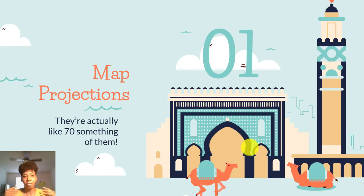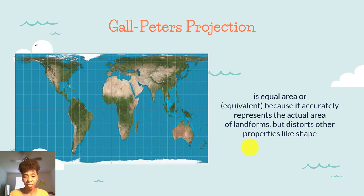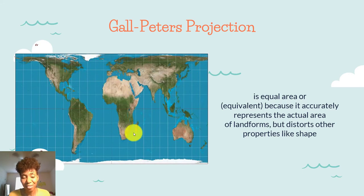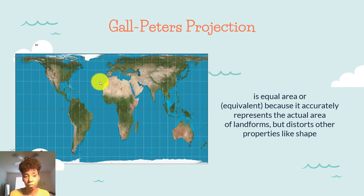There are at least 70 different types of map projections, but we're going to get into just a few that you definitely need to know. First, you have the Gall-Peters projection. It's an equal area, or equivalent projection, because it accurately represents the actual area of the land forms. The area is accurate, but the shape is distorted — Africa doesn't look that elongated, but the actual area is equivalent and accurate. The area of Australia and North America are accurate, but the shapes are very distorted.